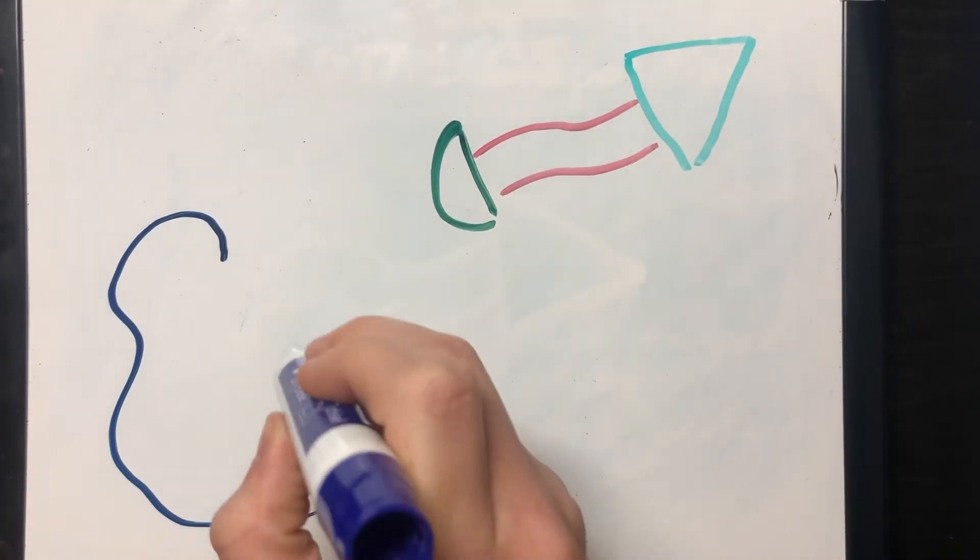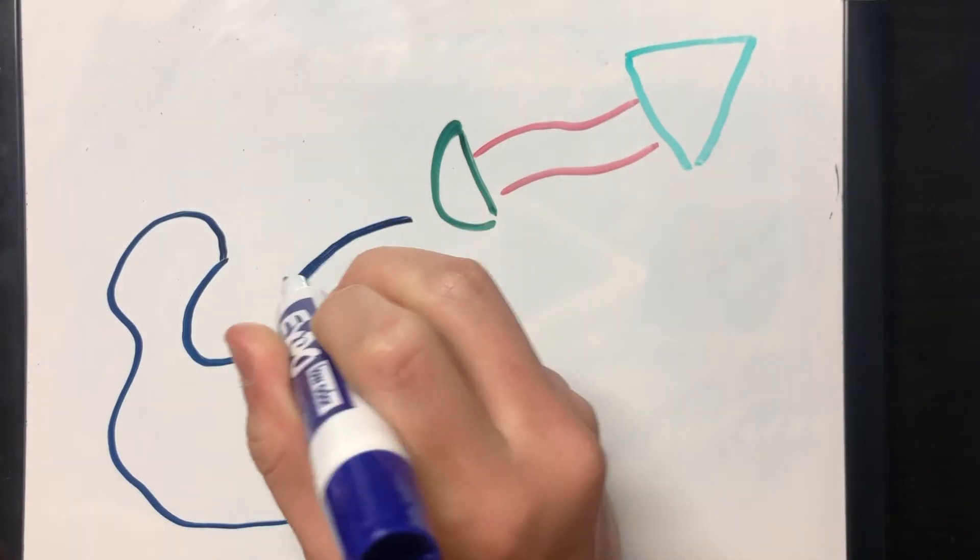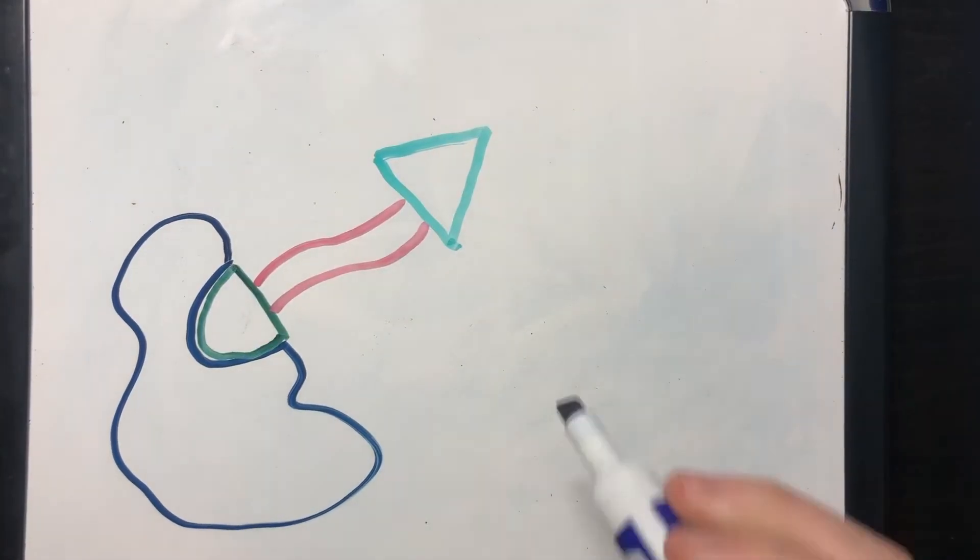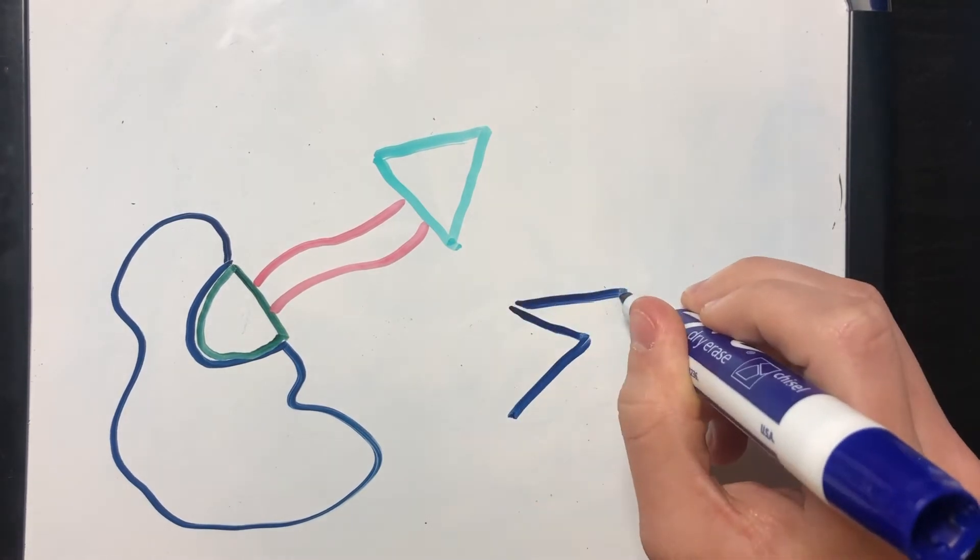The PROTAC molecule's target protein binding head locates and acts on the target protein surface or within shallow cavities with sufficient affinity to induce protein degradation.